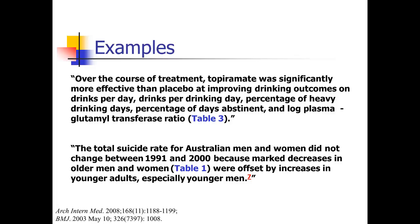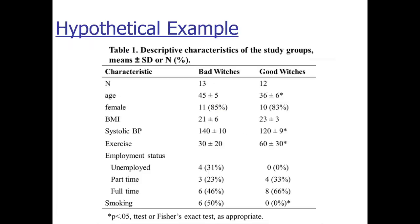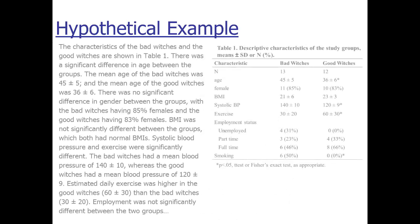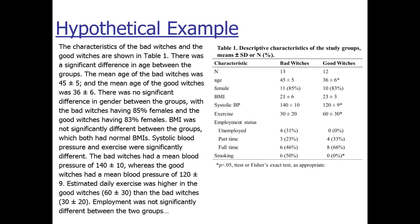Now I'm going to give some examples of what not to do. I'll go back to our hypothetical study on bad witches and good witches. Imagine you're doing a study comparing bad witches and good witches. I gave you that made-up table one with data on our witches showing that bad witches tended to be a little bit less healthy — a little bit older, they exercised less, things like that.